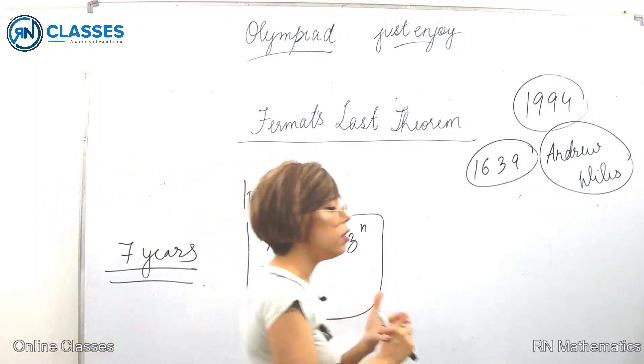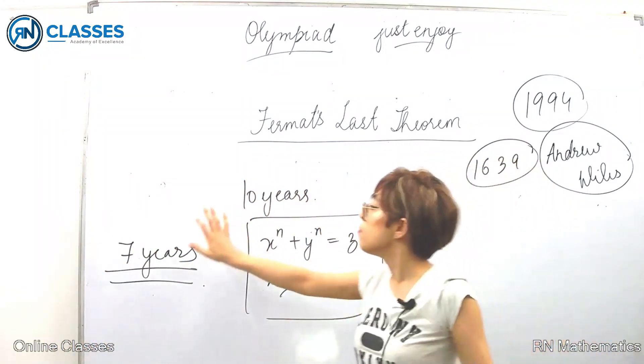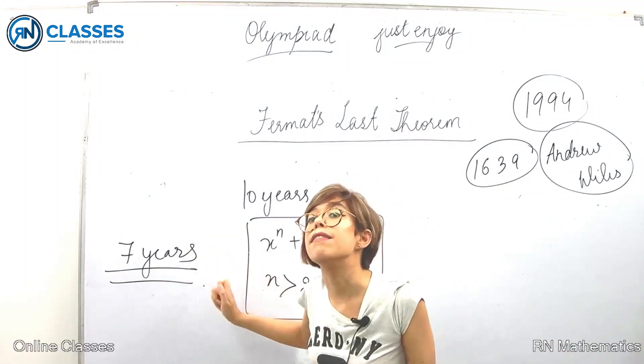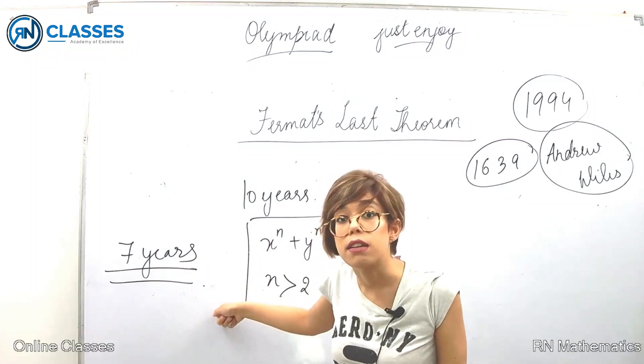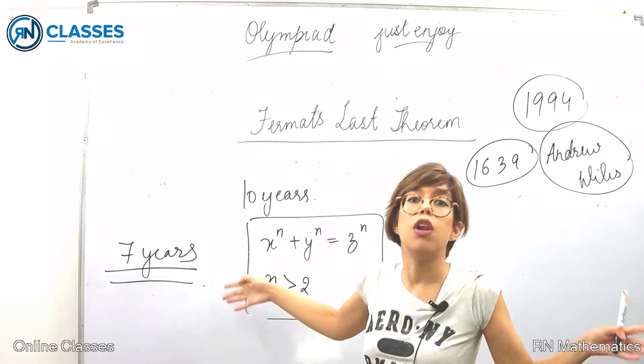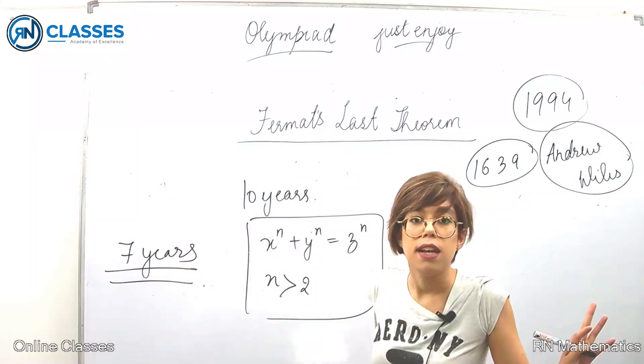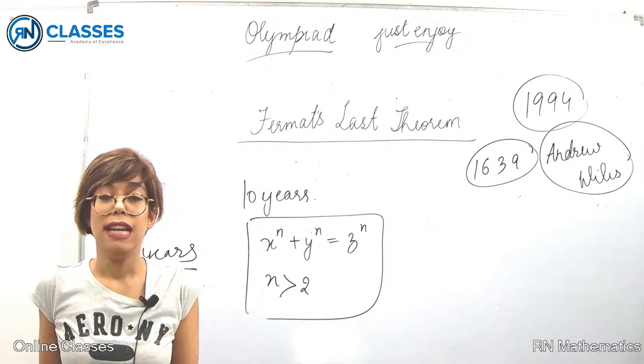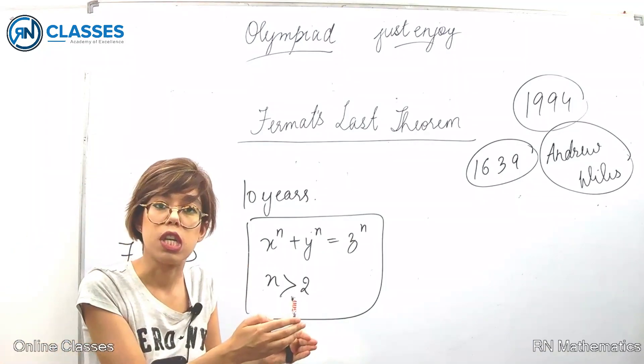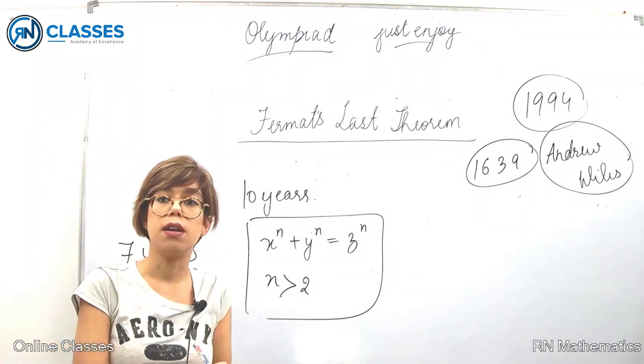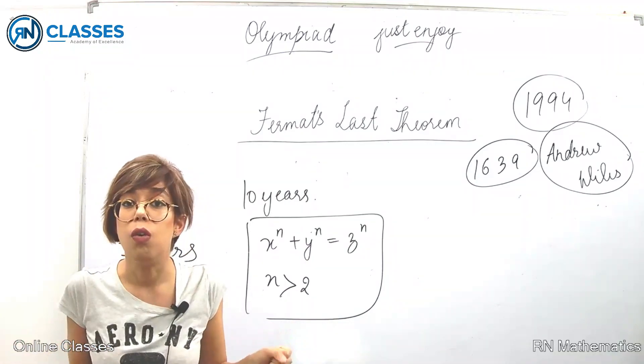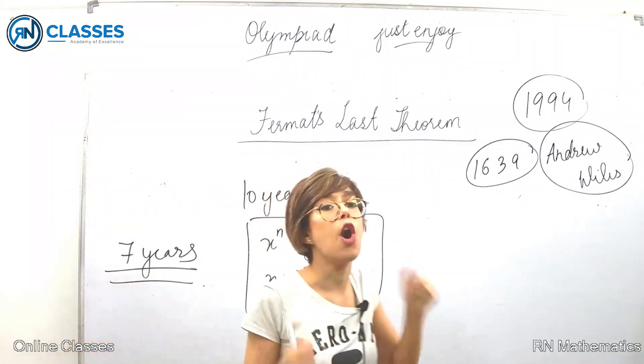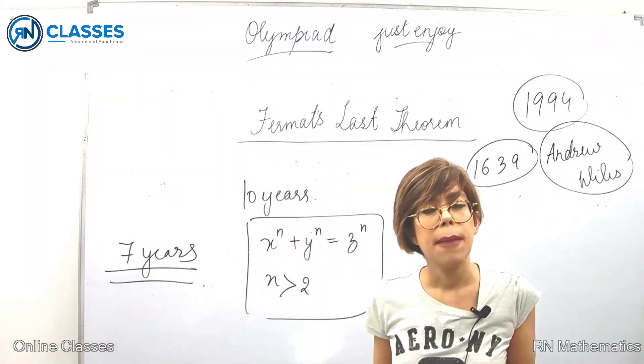Two things we have to learn from his life. First, the importance of perseverance. He was at the problem for seven years. We also have to start doing that. I'm not saying solve a problem for seven years, but give time to the question. Instead of looking for shortcuts or new methods, give time to the problem. Devise your own method, your own shortcut.